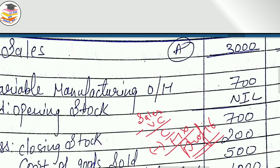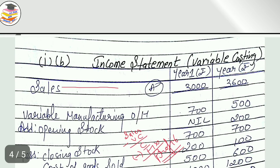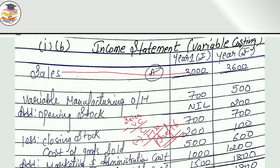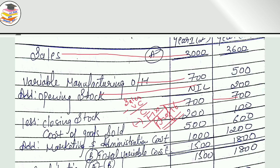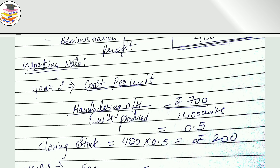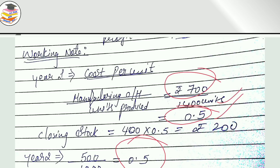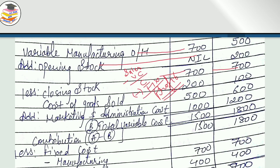Sales remain as before — no problem. Variable manufacturing overhead is the same. Opening stock is zero. Add them: Rs. 700. Then subtract closing stock. The closing stock formula is the same. The variable manufacturing overhead divided by units produced gives Rs. 0.5 per unit. Closing stock: 400 units into Rs. 0.5 = Rs. 200. Opening stock plus production minus closing stock gives cost of goods sold.